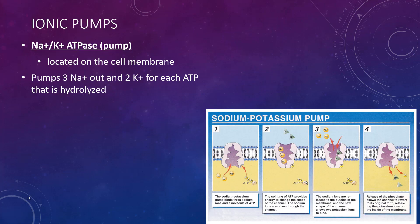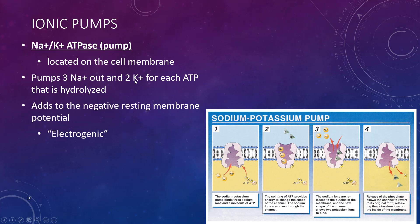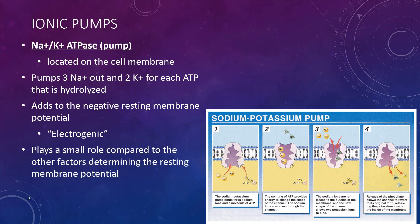The other thing that contributes to the resting membrane potential is the sodium-potassium pump. It's located on the cell membrane and pumps three sodium out and two potassium in for each ATP. This adds to the negative resting membrane potential, so it's considered to be electrogenic — three positive charges out, two positive charges in. If you keep track of that over time, you have more positive charge on the outside versus the inside. Overall, though, this plays a small role compared to the relative permeability we just finished talking about.